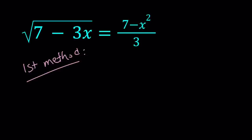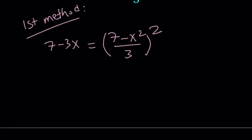For my first method, I'm going to square both sides. This is going to give me—the radical is going to disappear once I square it. And I'll have the square of a quotient. To square that, we can just square the numerator, which is 49 minus 14x squared plus x to the fourth, divided by 9.